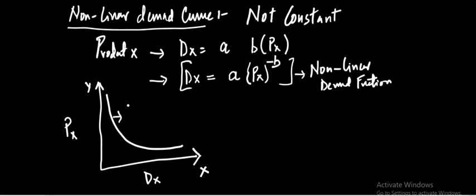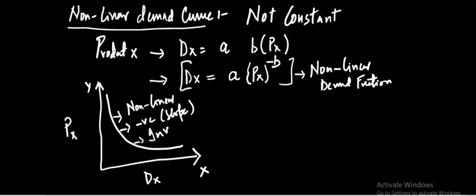This relationship is a non-linear one. The slope is going to be negative again, showing the inverse relationship. Notice that beta is negative again, which means the slope is always going to be negative, indicating an inverse relationship flowing between the quantity demanded and the price of the product.